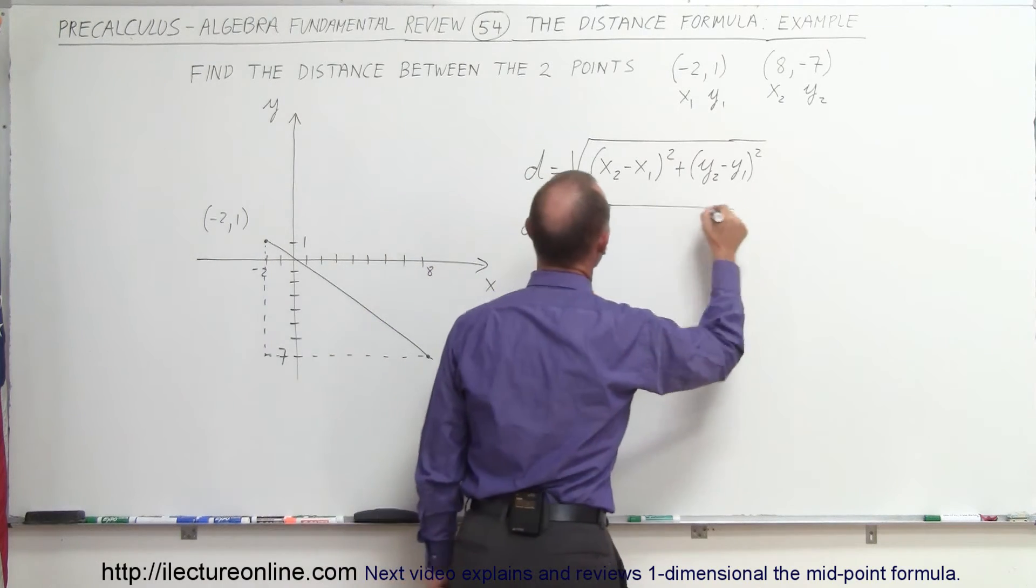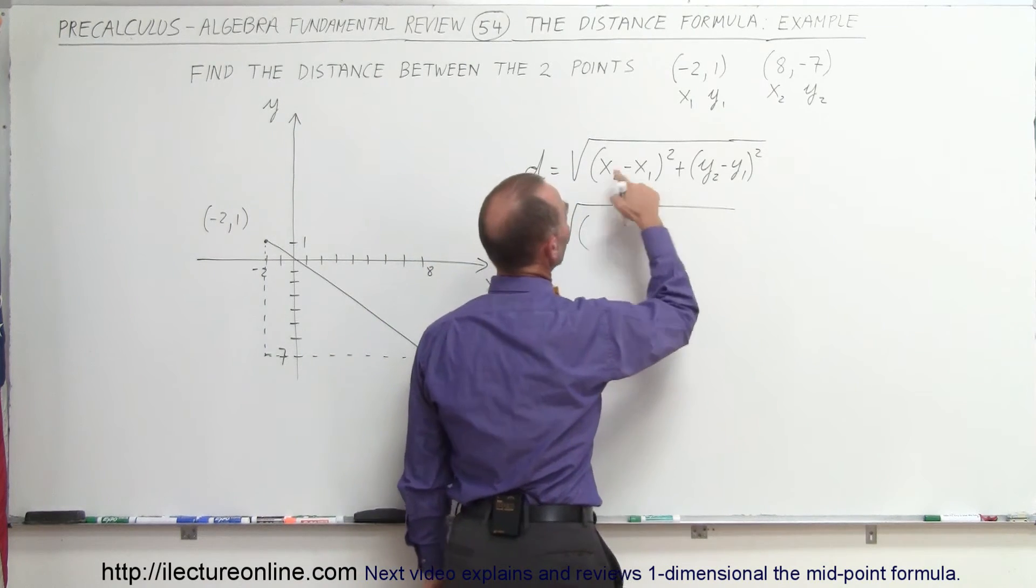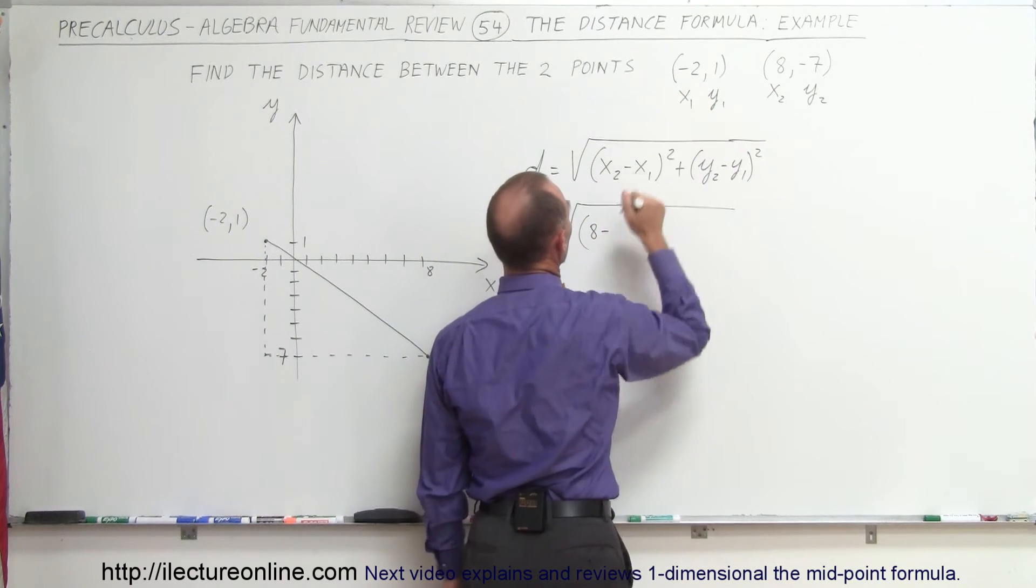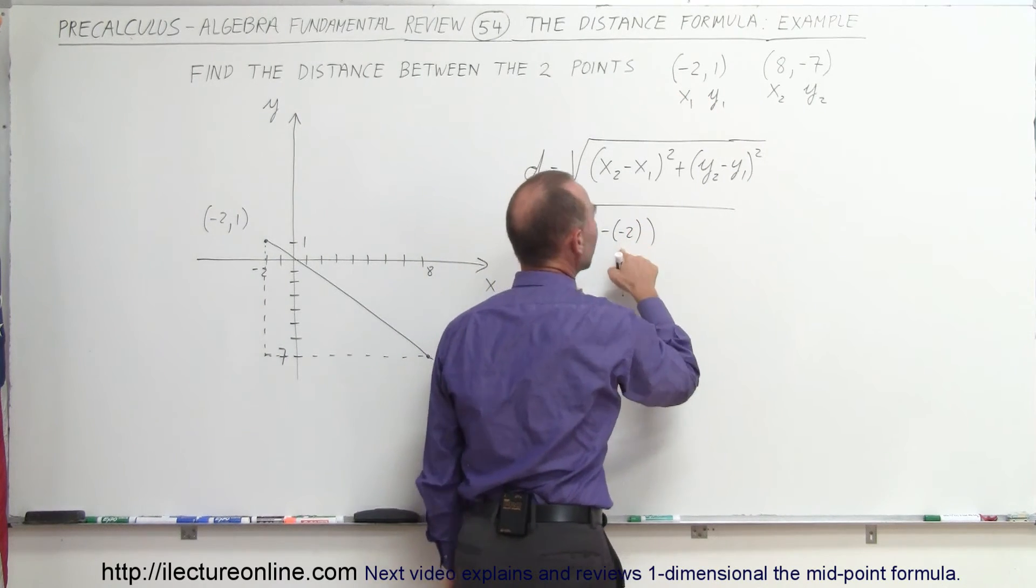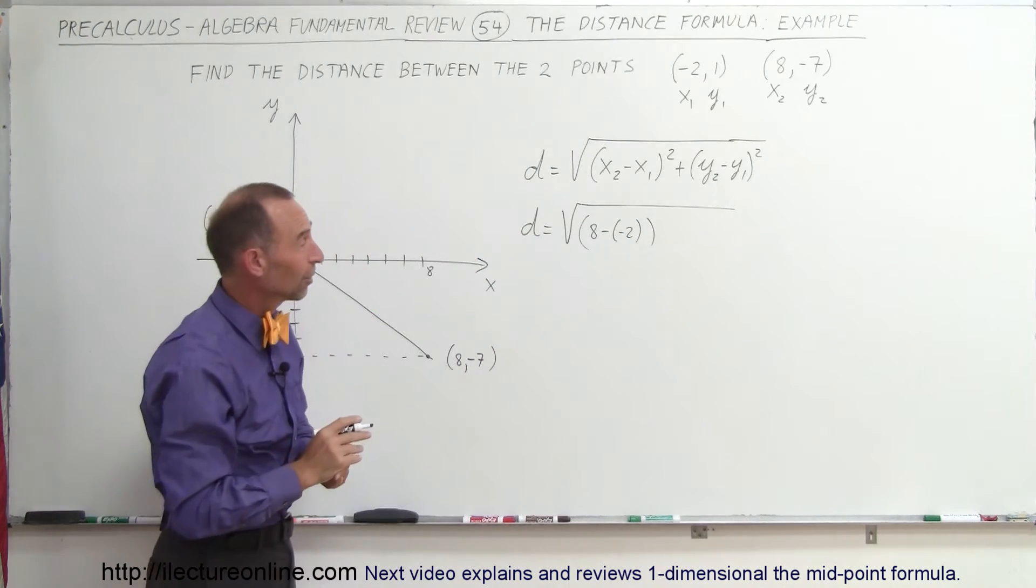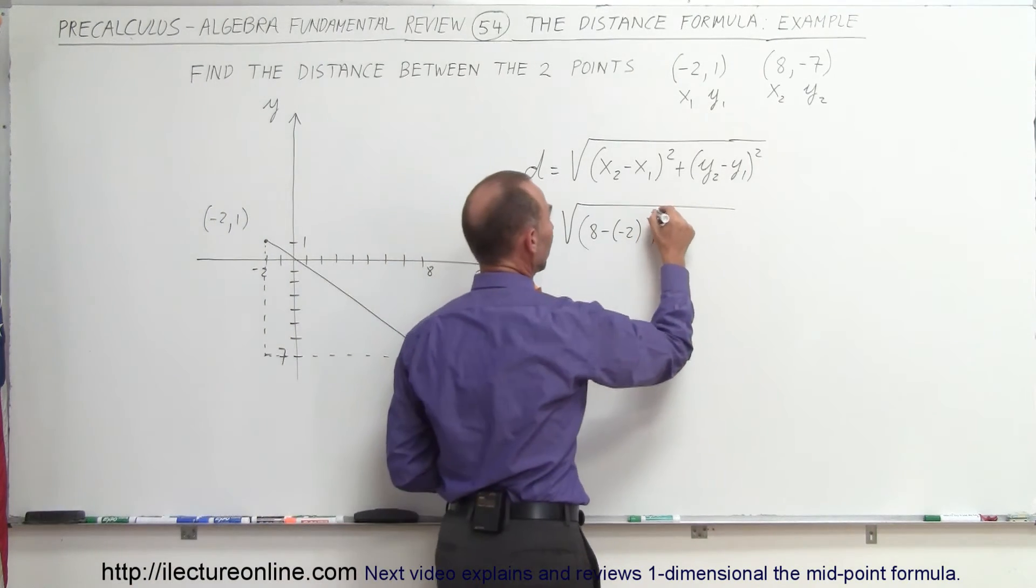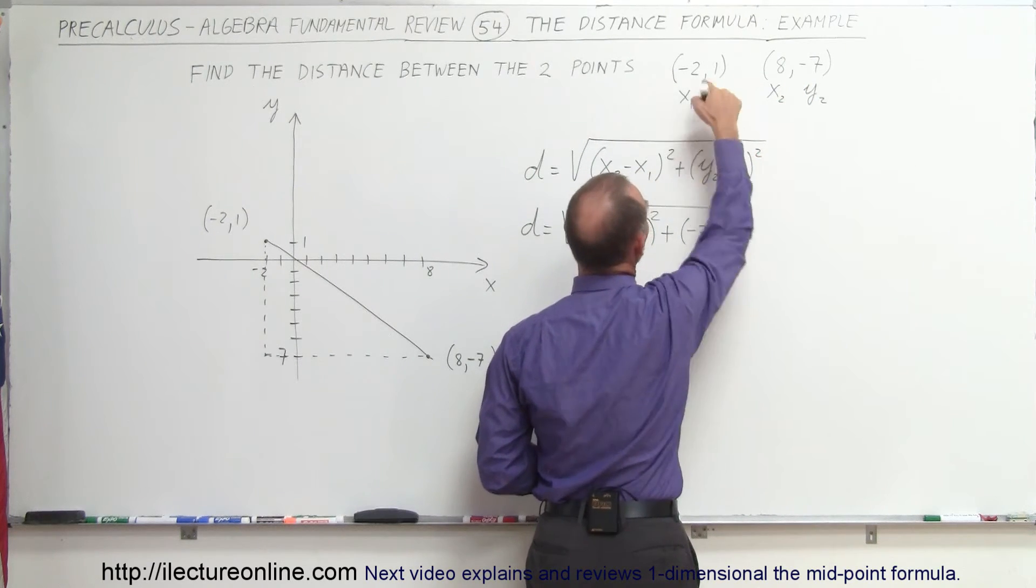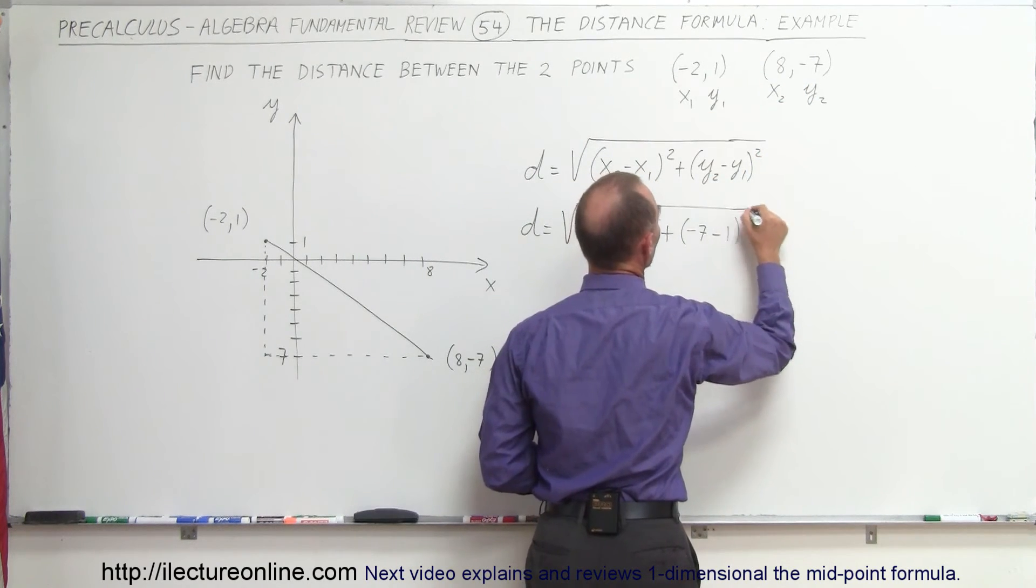So d is equal to the square root of... So here we have x2, which is 8, minus x1, which is minus 2. It's always a good idea to use parentheses so we don't make a mistake with the signs. Then we have to square that, plus y2, which is minus 7, minus y1, which is 1. And we square that as well.